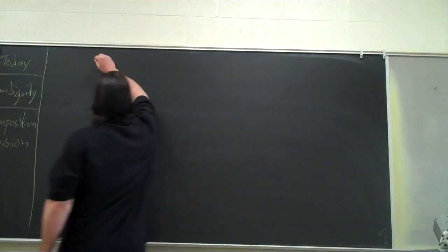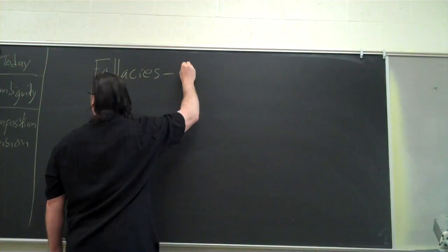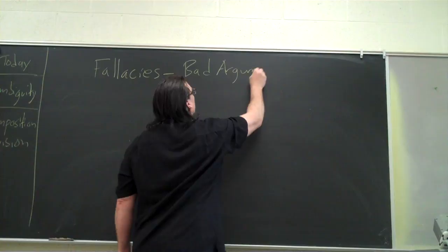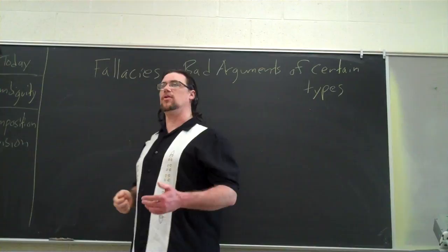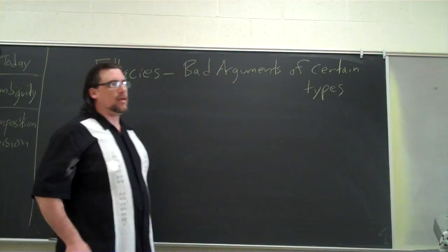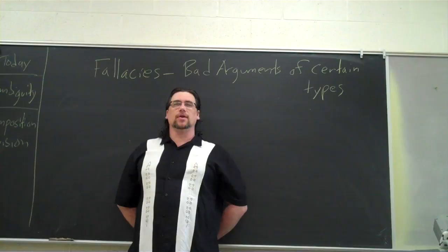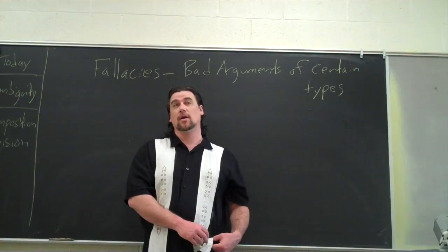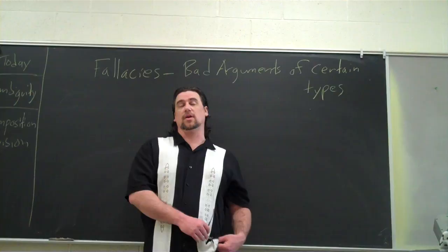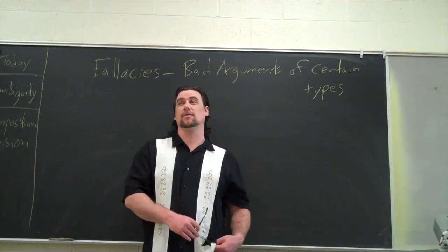Now we're looking at two fallacies. Fallacies are bad arguments of certain types that we see made over and over again, and they've been going on so long that they have their own names. Occasionally you may see some of them called by different names in other classes or textbooks. One of the ones we're going to look at later is called appeal to popularity — sometimes argument from popularity — and you might have heard of it as the bandwagon fallacy.